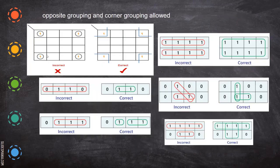Here opposite grouping: when you have ones in the corners, writing them as separate groups is wrong, because when you roll the map you can form a quad like this. So you can roll the map and do corner grouping. And when you are able to form an octet, you are not supposed to form a quad — that is why that is marked incorrect.